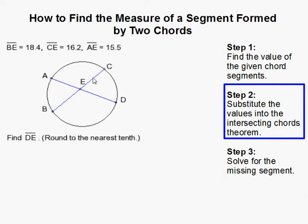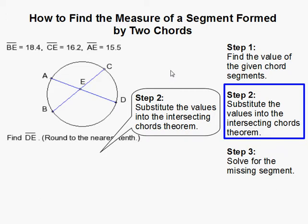Now that we're given these three values - BE, CE, and AE - we're going to substitute them into the intersecting chords theorem.